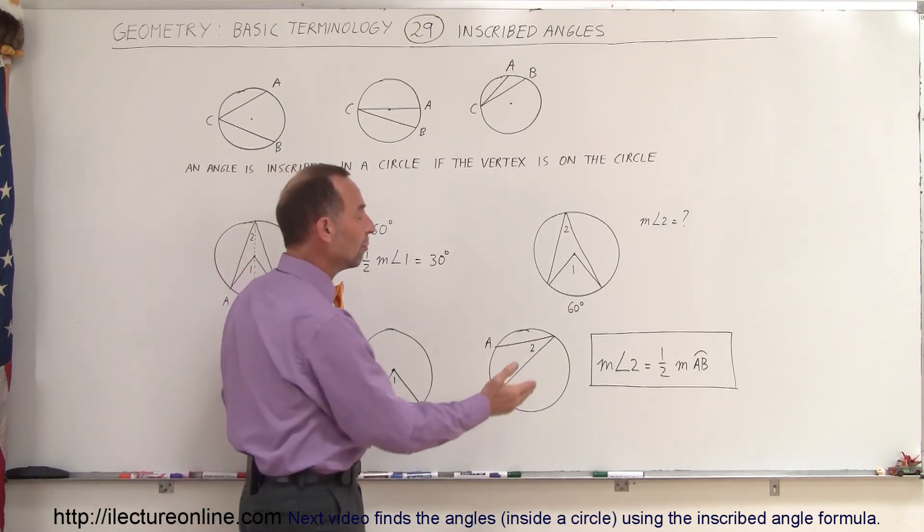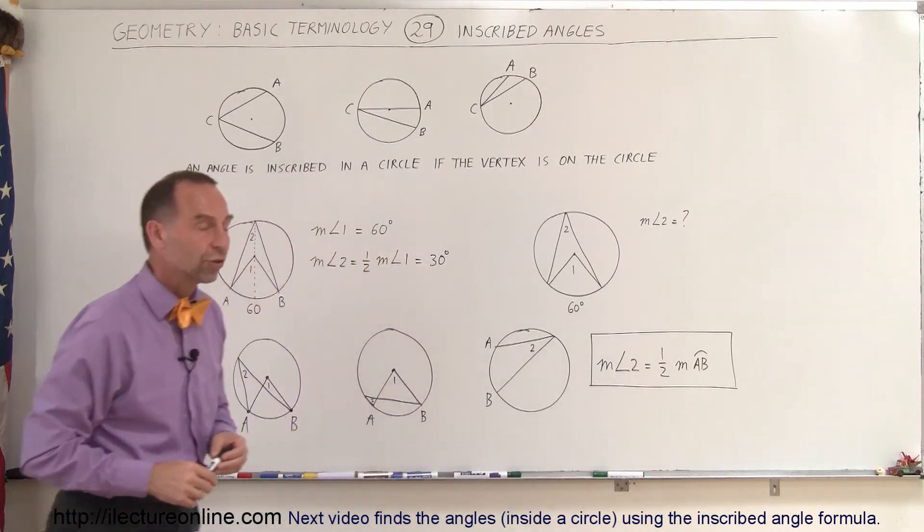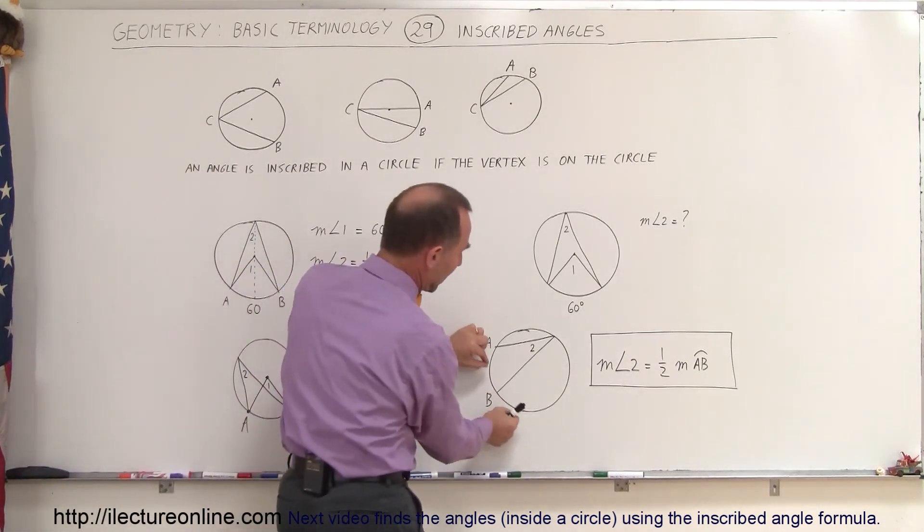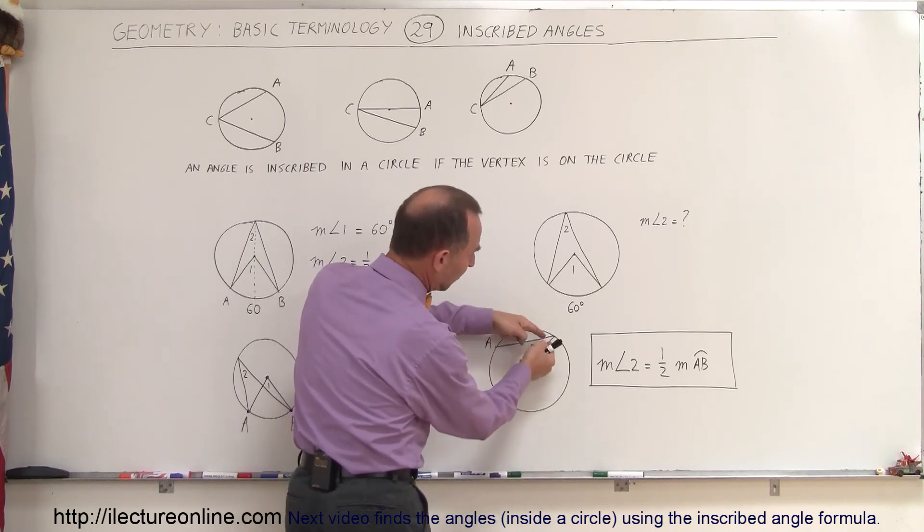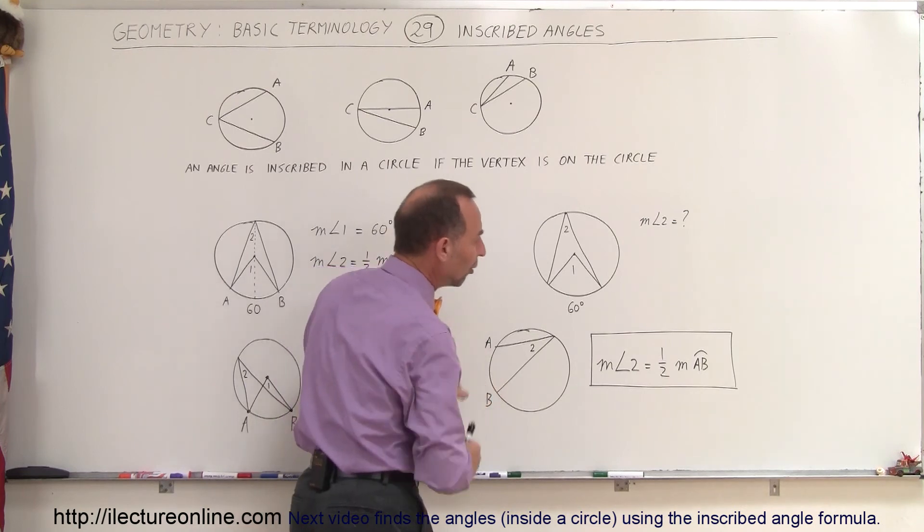So in other words, the measure of the angle is equal to one-half the measure of the arc on the other side of the circle. Regardless of where that is, you can take your points A and B anywhere you want, and the measure of the angle will always be exactly half the measure of the arc. And so the answer is yes.